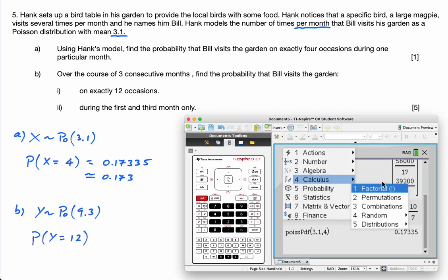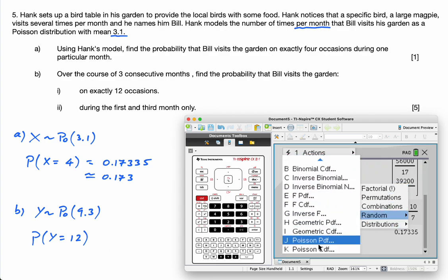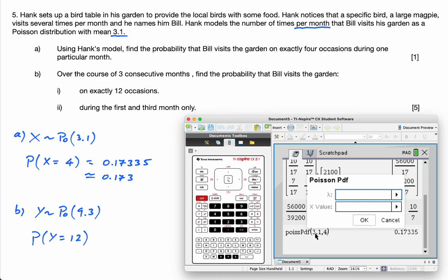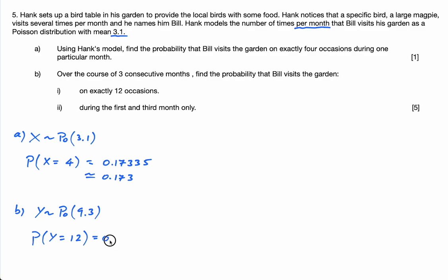So, probability distributions, Poisson at the bottom, PDF. And it is 9.3 and 12. And we get 0.079895. That's B Part I.